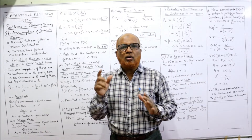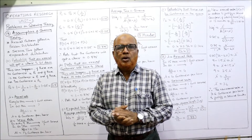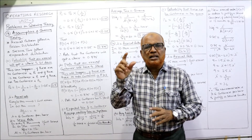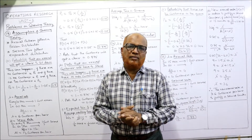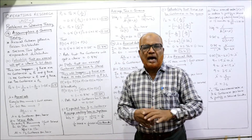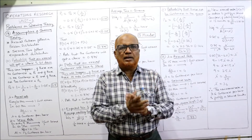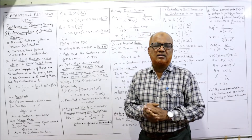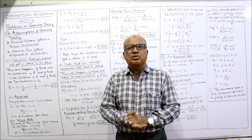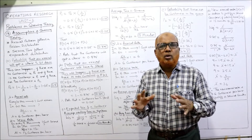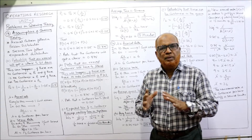Go through the concept of the queuing model, the assumptions of the queuing model, the characteristics of the single channel queuing model, and the six formulas: average queue length, average queue system, waiting time in the queue, waiting time in the system, utilization factor rho, and lastly probability of no units in the whole system P0. All problems are based on these formulas.